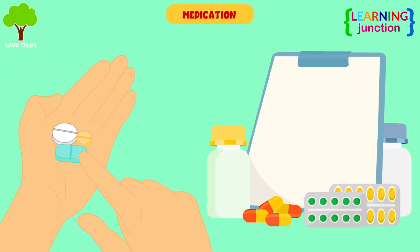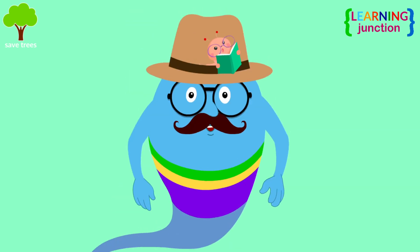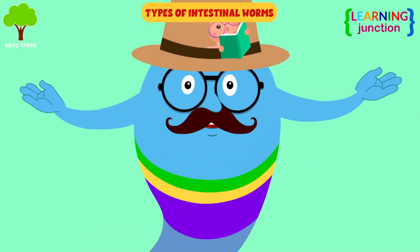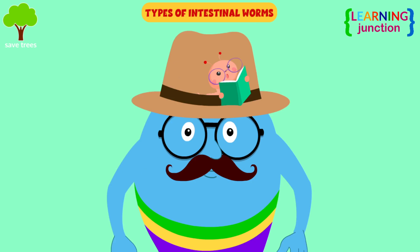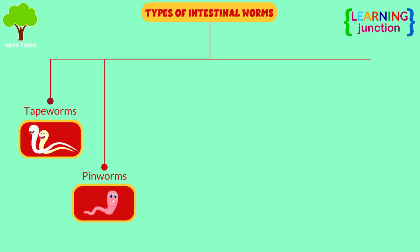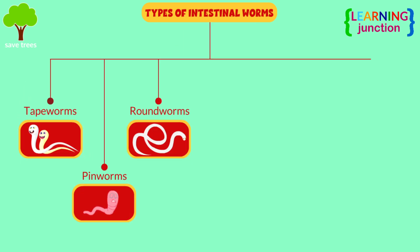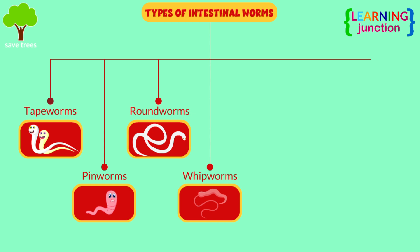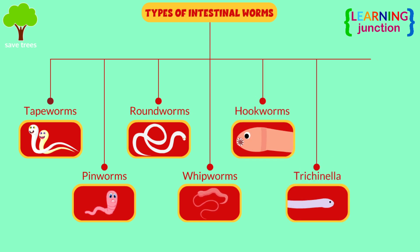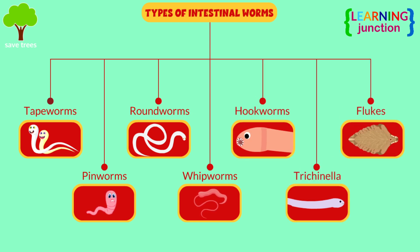Medication is often effective at getting rid of worms. Let's review. Here is a list of types of intestinal worms: tapeworms, pinworms, roundworms, whipworms, hookworms, Trachonella, and flukes.